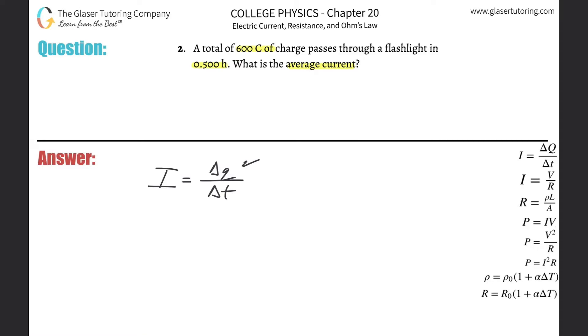The standard units for charge are going to be Coulombs. Standard unit for time is going to be in seconds. A Coulomb per second is known as an amp or an ampere. That's the standard unit for current.